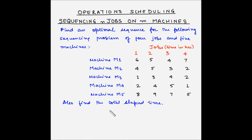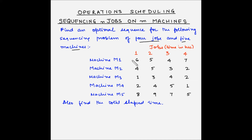Welcome to another example of operation scheduling where we'll see how to sequence n jobs on m machines. Find an optimal sequence for the following sequencing problem of 4 jobs and 5 machines. Jobs 1, 2, 3, and 4 need to be processed on 5 machines M1, M2, M3, M4, and M5. Each job has to be processed first on M1, then M2, then M3, then M4, and then M5.